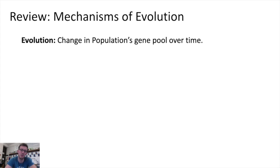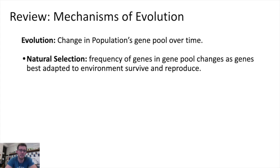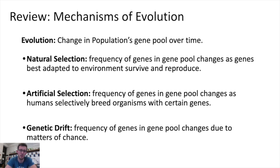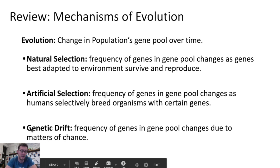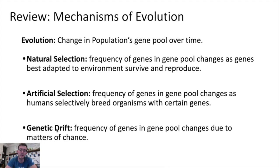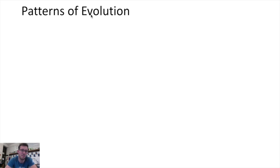Hey bio team. You guys have learned that evolution is just a change in a population's gene pool over time, and you've learned that there are three main ways in which evolution can occur: through natural selection, through artificial selection, and through genetic drift. What this video focuses on is not the mechanism by which evolution in a population is occurring, but the ways in which multiple populations can evolve in relationship to each other.